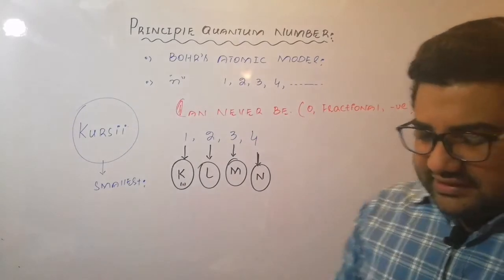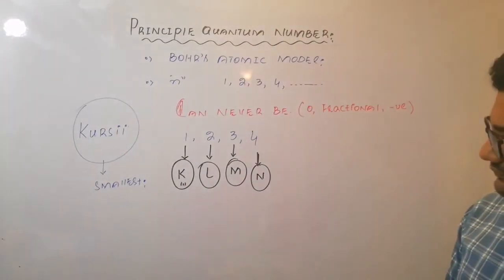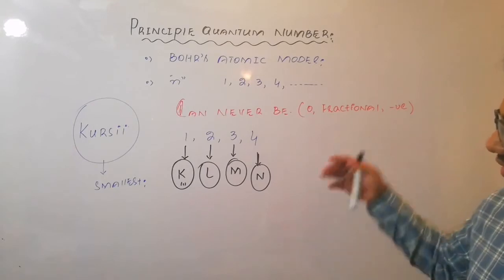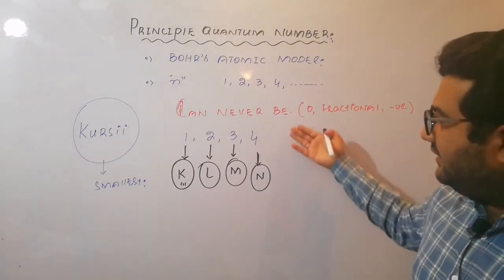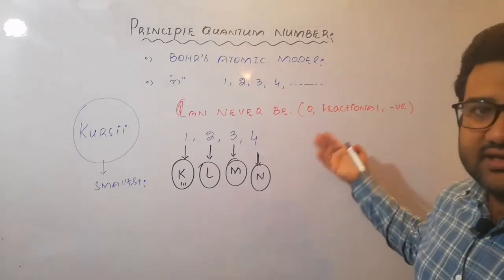So the first information is about the shells: K, L, M, N. Obviously if it will be 5, O. Then if the value of n will be 6, P, and so on.